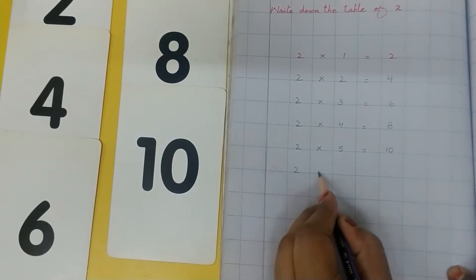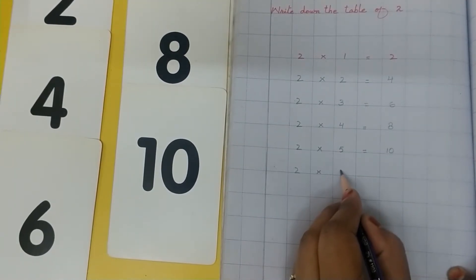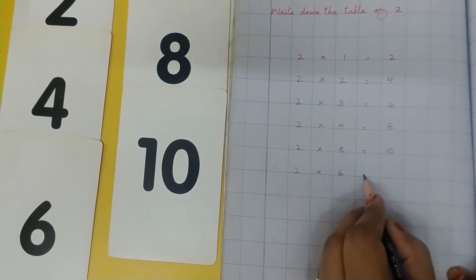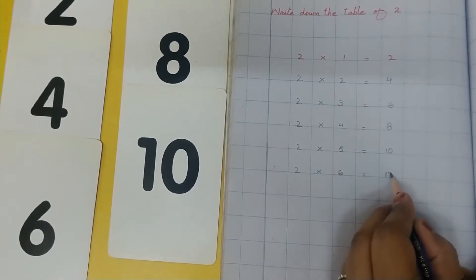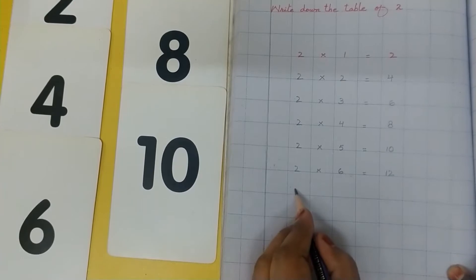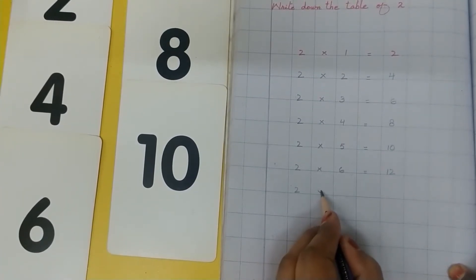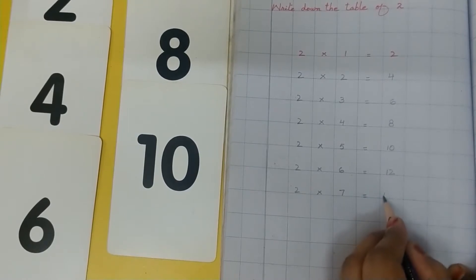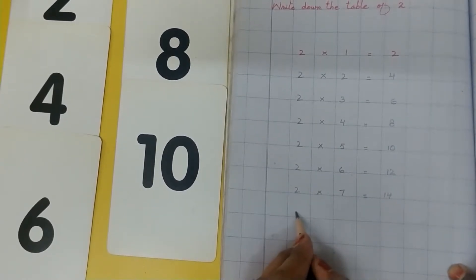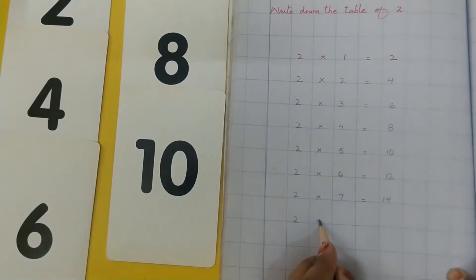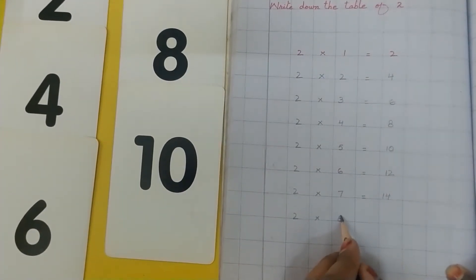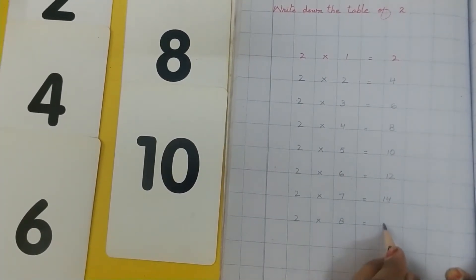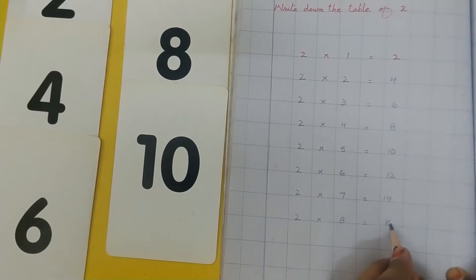2 multiplied by 6 is equal to 12. 2 multiplied by 7 is equal to 14. 2 multiplied by 8 is equal to 16.